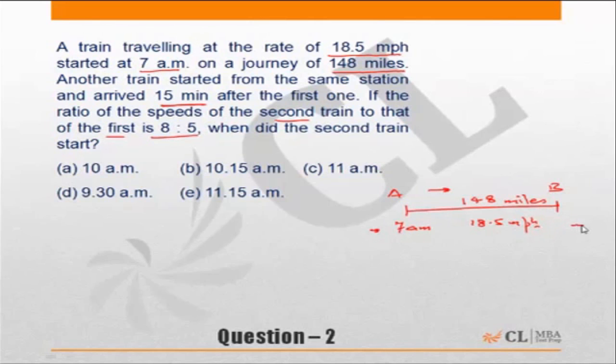Distance is 148 miles divided by 18.5. This will be equal to... you can divide it, but you could just do it mentally also. 18.5 into 2 is equal to 37.